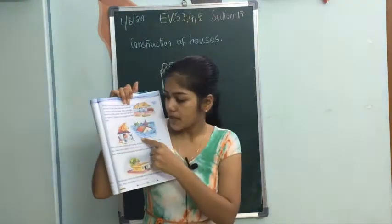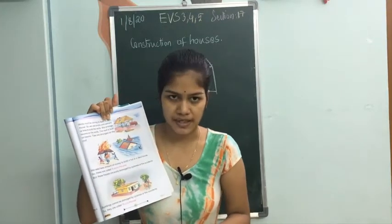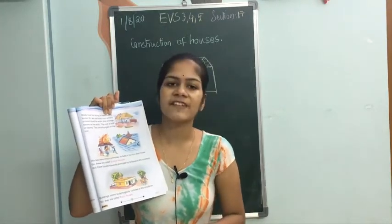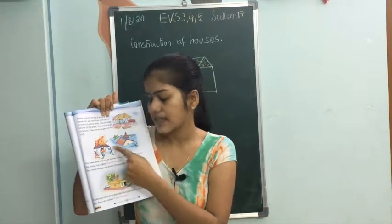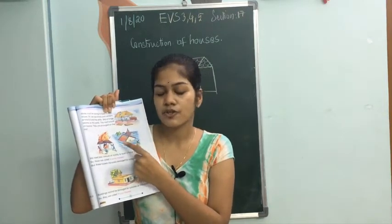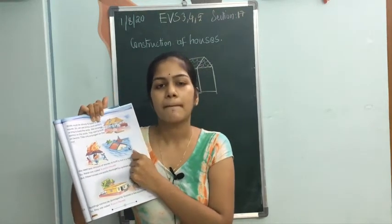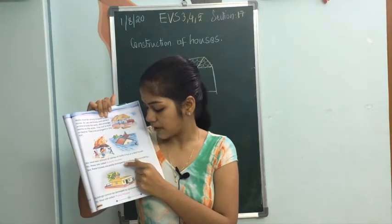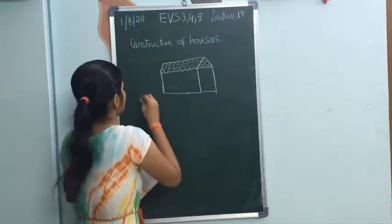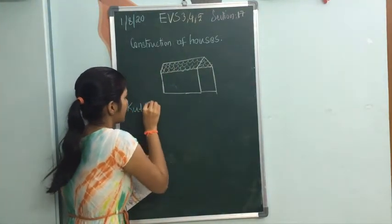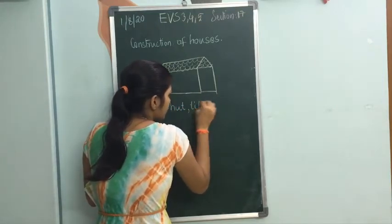If you see here, this is a hut and this is a tile house. Huts and tile houses don't require much money and can easily be built. But the problem is they can't withstand fire accidents or floods — they get easily damaged. So we call them kacha houses. Kacha houses can be built with less money, but if there is any fire accident or cyclone, they won't give much protection to humans.